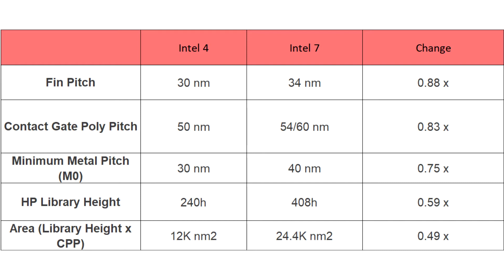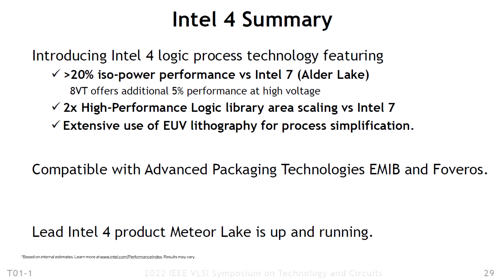Previously referred to as a 7nm process, Intel 4 is the company's first node to use EUV lithography accompanied by various technologies. The first thing when a new process node is discussed is density. Compared to Intel 7, Intel 4 will double the transistor count for the same area and enable 20% higher performing transistors. The new Intel 4 node represents a very tiny piece of silicon that is even smaller than its predecessor.